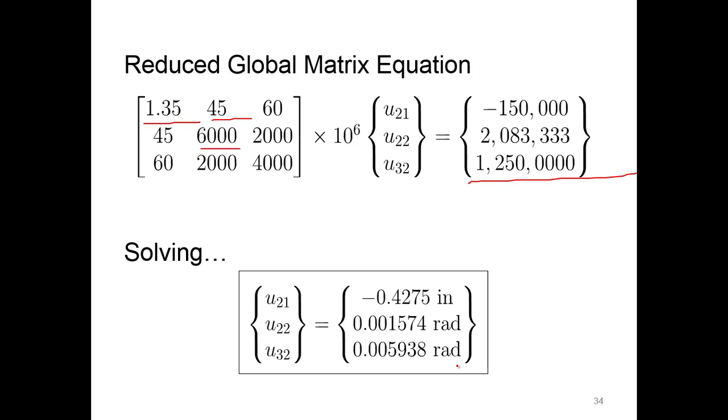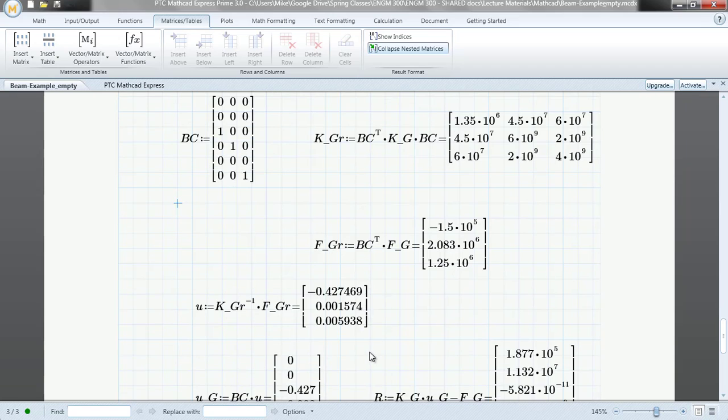And let's solve this guy. So solving, we got the displacement there. I've added in the units there. So negative 0.4275 inches there at node two. Rotation there, 0.001574 radians. And the rotation at node three, 0.005938 radians. So let's check that out here. So there's our radians and this one is our inches. Again, having to remember that the units are based on what we used earlier on because we obviously don't have any units showing here with our matrices because of inches and radians.